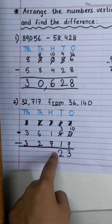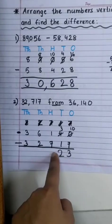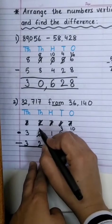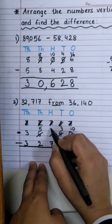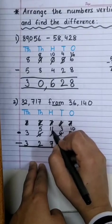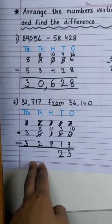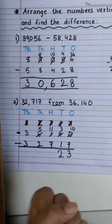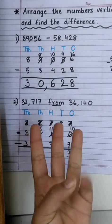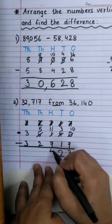1 minus 7. Not possible. So, it will seek help from 6. And this will become 11. Now, 11 minus 7. After 7: 8, 9, 10, 11. 4.